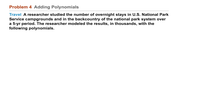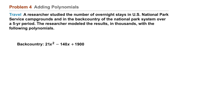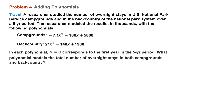The researcher modeled the results in thousands with the following polynomials. For campgrounds it was negative 7.1x squared minus 180x plus 5,800. For the backcountry it was 21x squared minus 140x plus 1,900.